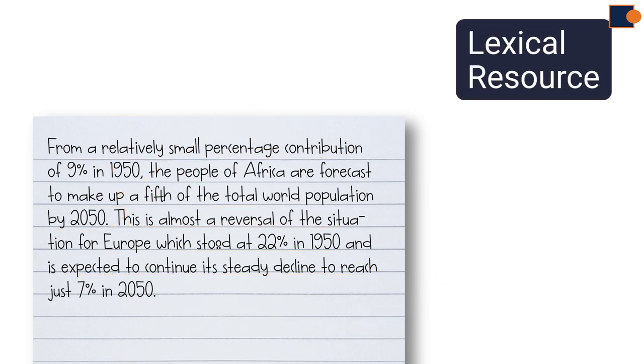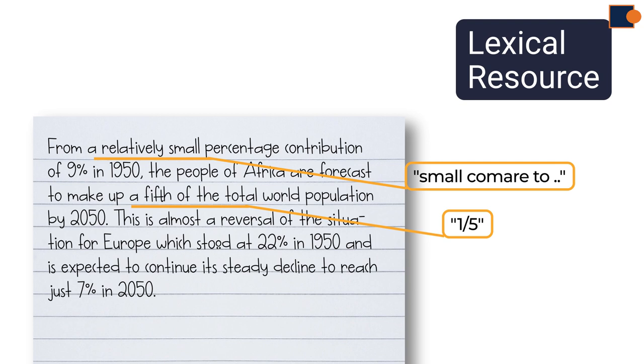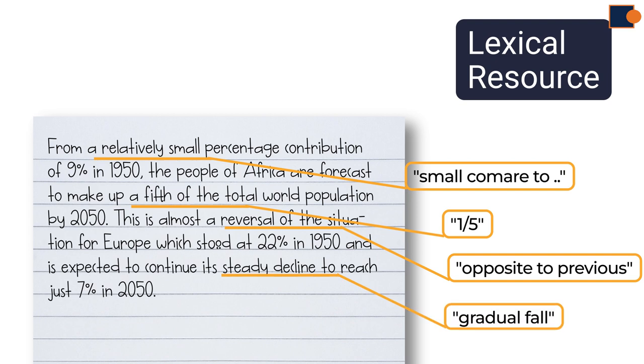Now, let's examine from lexical resource perspective. Relatively small means small compared to other given places. A fifth of total means 1 over 5. Reversal of the situation means opposite of previous option. Steady decline means go down gradually or in the same pace. So, wide range of words are used.